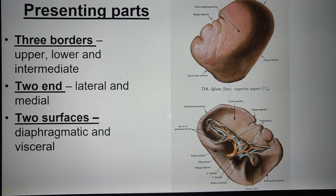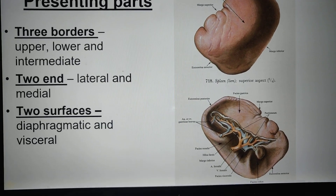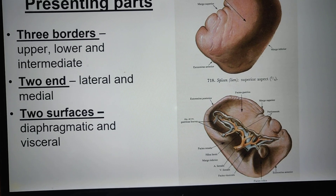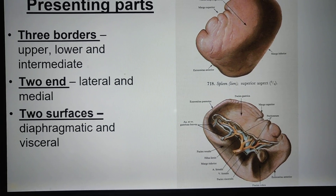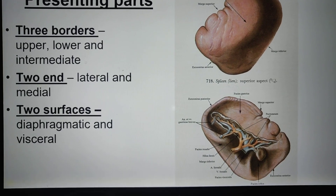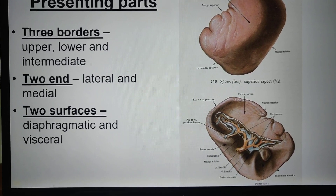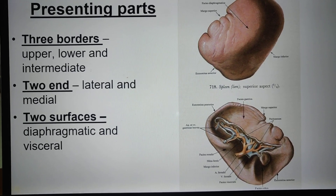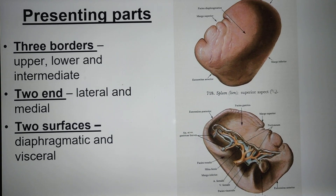The spleen has three borders: the upper border, the lower border, and the intermediate border. It has two ends: the lateral end and the medial end. It has two surfaces: the diaphragmatic surface, also called the costal diaphragmatic surface, and the visceral surface.